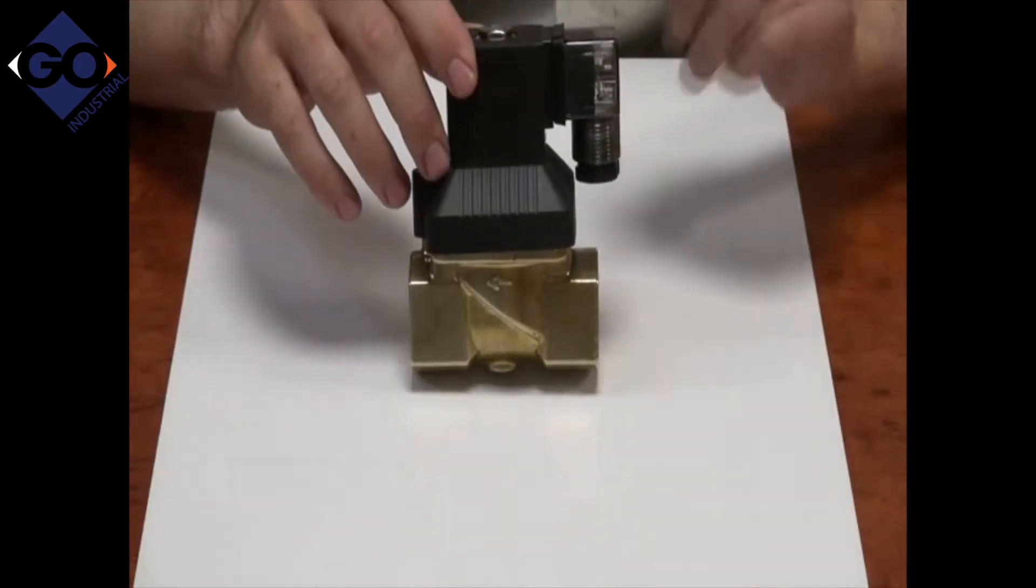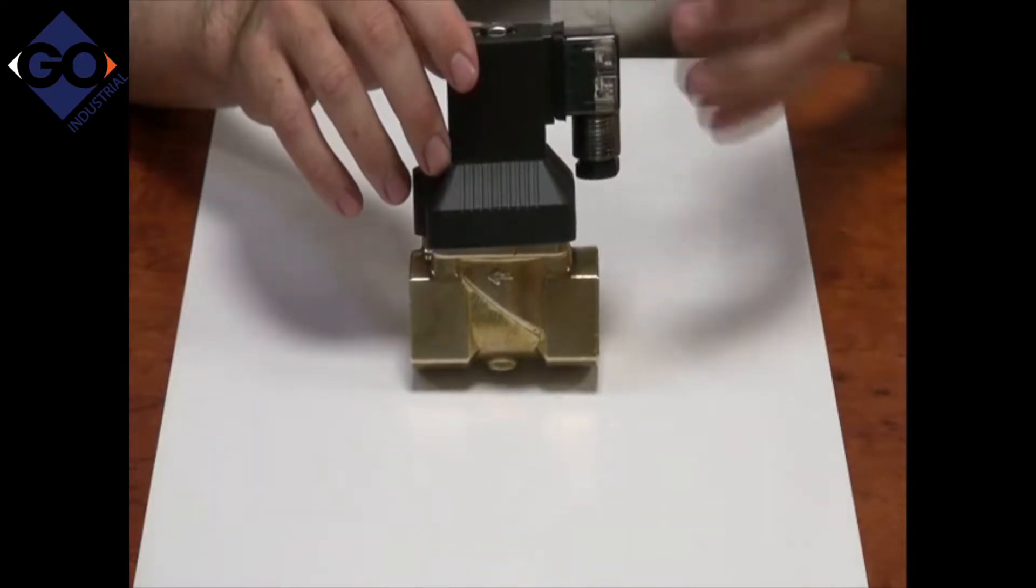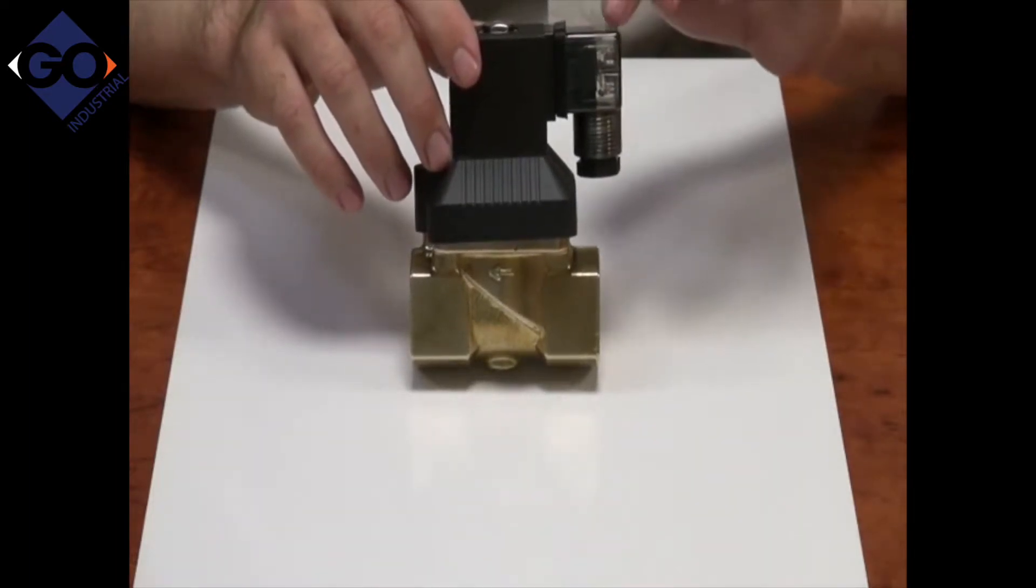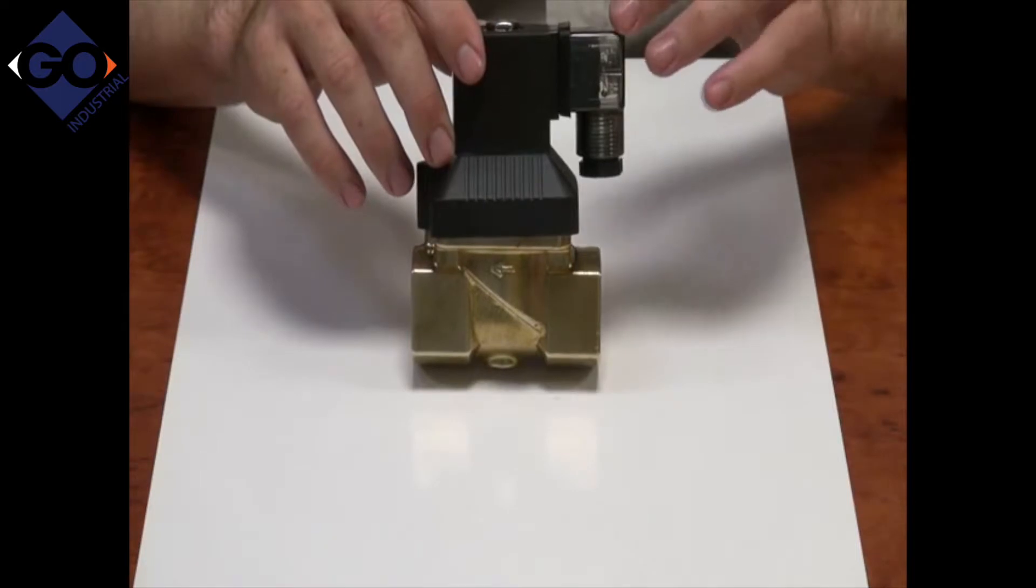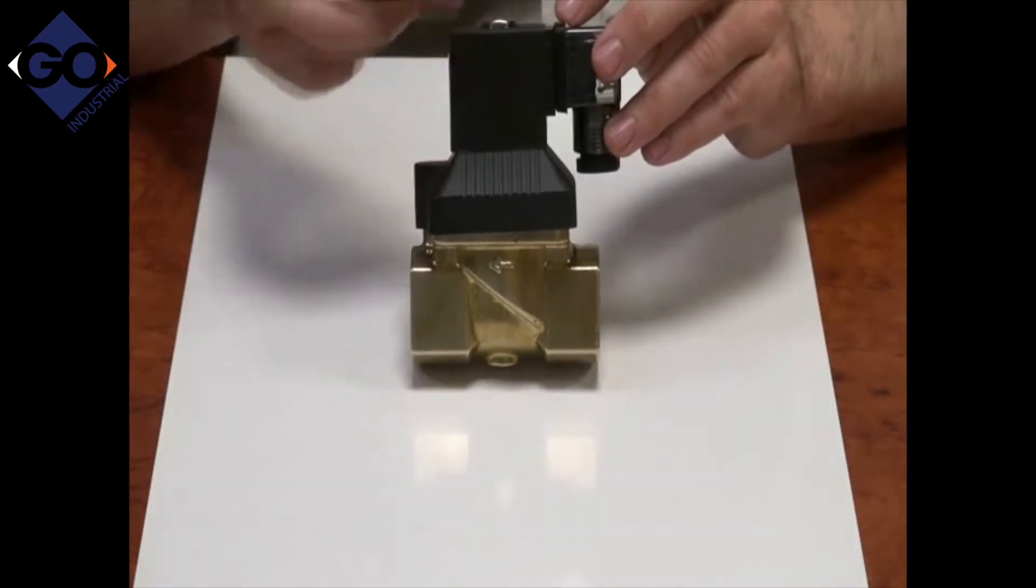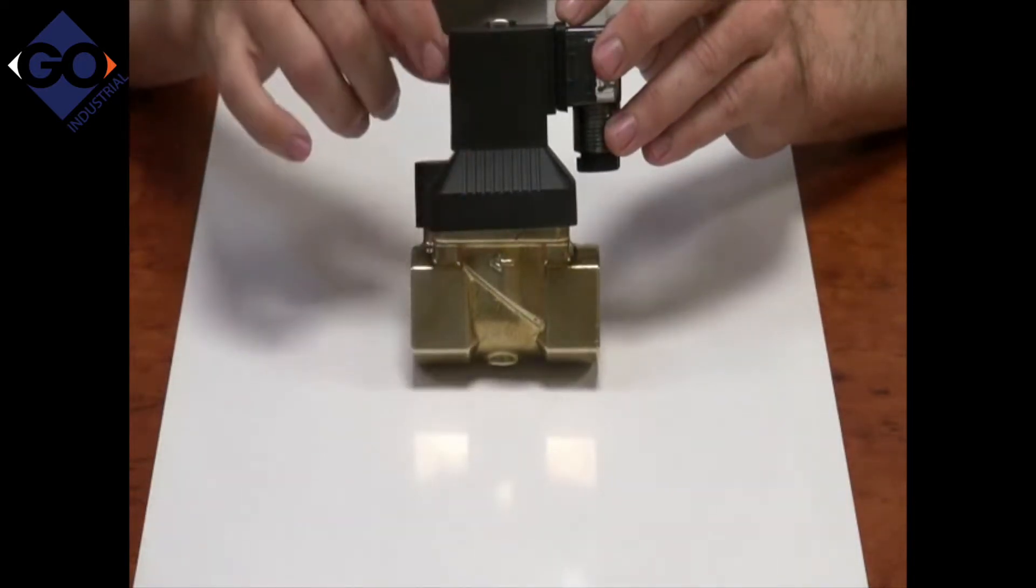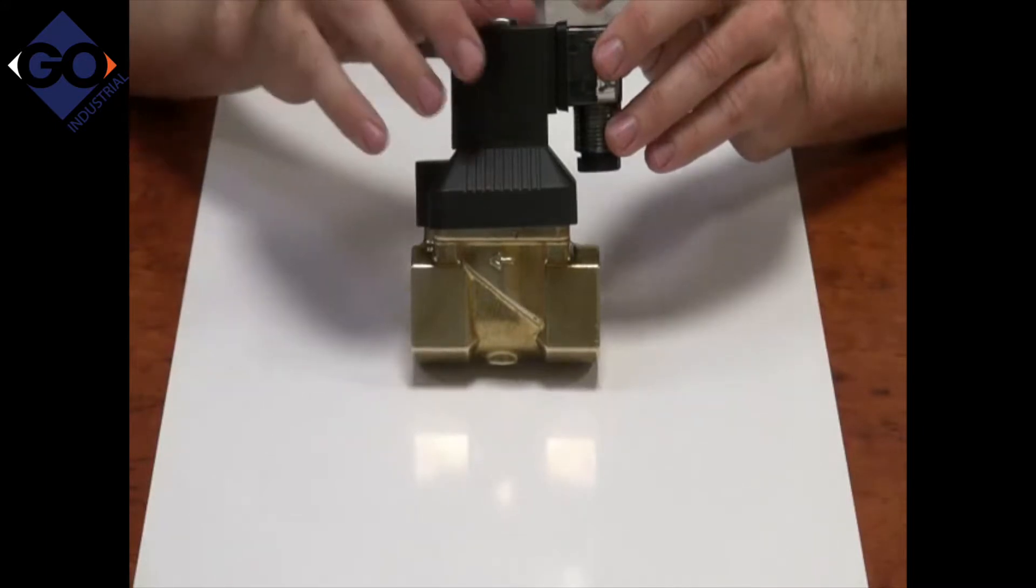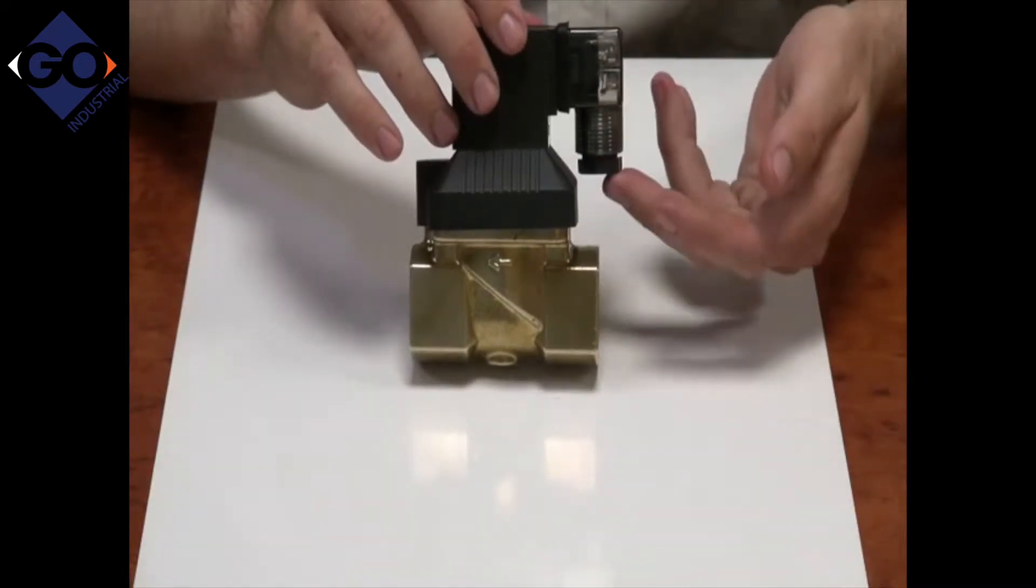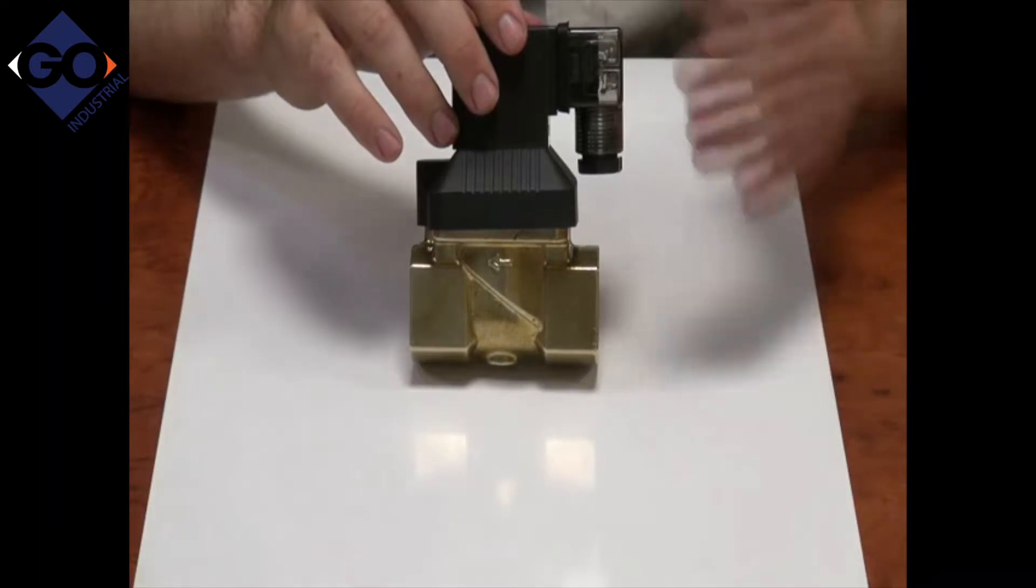It comes with the DIN plug which has an LED in it. This LED illuminates when there's power to the valve, the coil, and the body of the valve. This is everything you need. All you need to do is wire it up. It comes in all voltages.